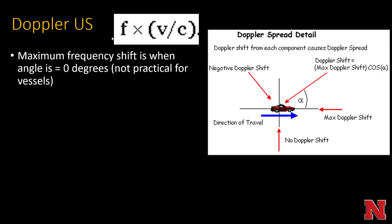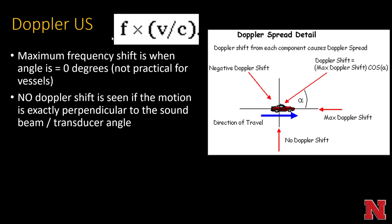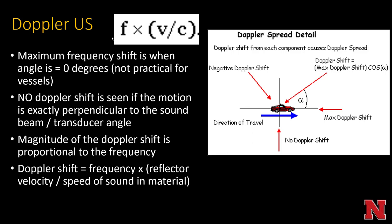The Doppler frequency shift equals two times the frequency times the velocity divided by the speed of sound. The maximum frequency shift occurs at zero degrees, which is not practical for vessels — you can't get to zero degrees without an intraluminal transducer, which isn't feasible. No Doppler shift is seen if the motion is exactly perpendicular to the sound beam, so at 90 degrees you'd see no shift — theoretically you could mistake a carotid artery for having no flow if imaging at exactly 90 degrees.